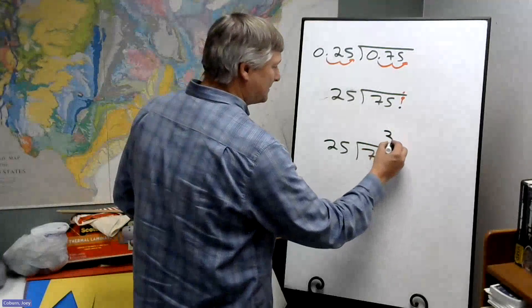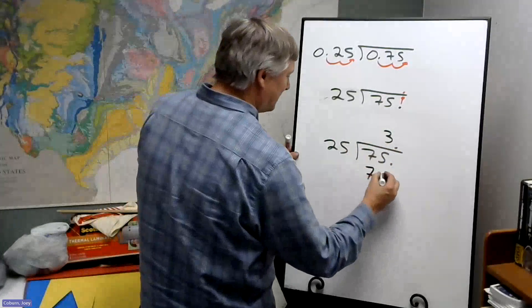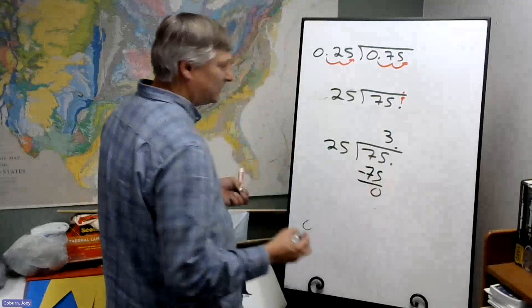We'll place that 3 over the last digit of our 75. 3 times 25 is 75, subtract is 0, and we're done.